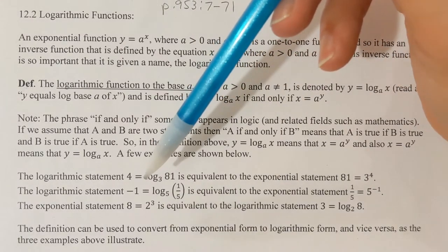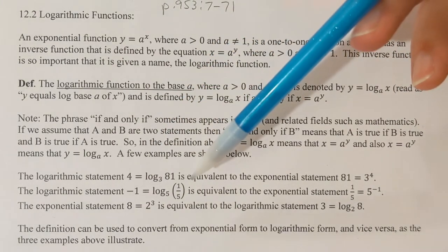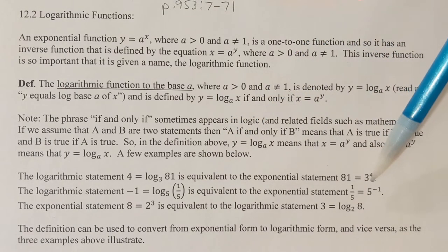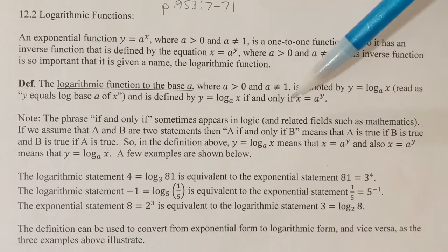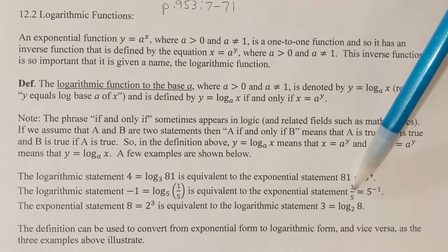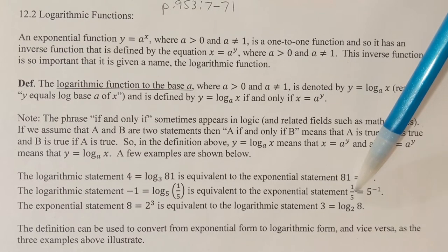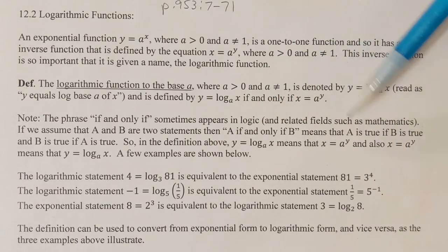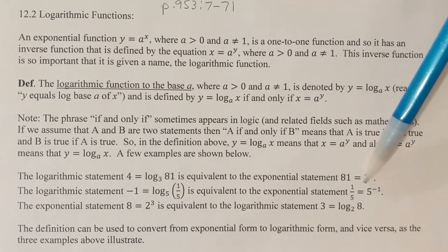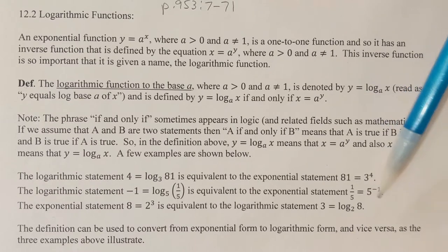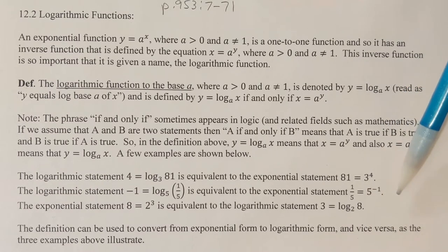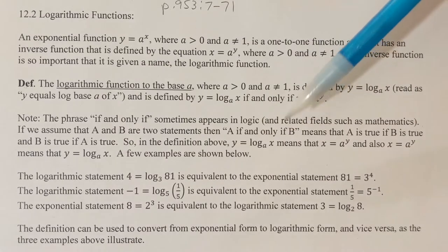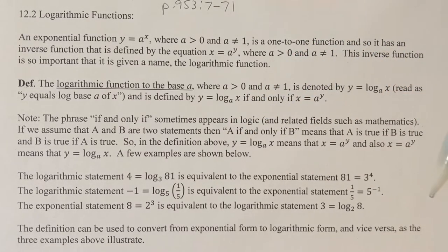Here's another example. The statement -1 = log_5(1/5): what does that look like in exponential form? x is 1/5, five is the base (my a value), and -1 is the y value — so negative one is the power of five. Five to the negative first power equals one-fifth. That's true by the laws of exponents: 5⁻¹ = 1/5. Both forms mean the same thing.